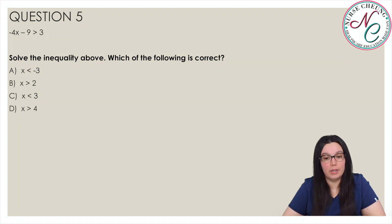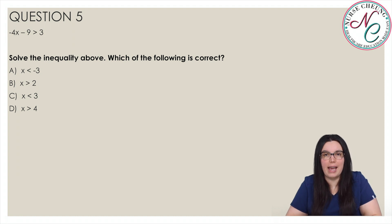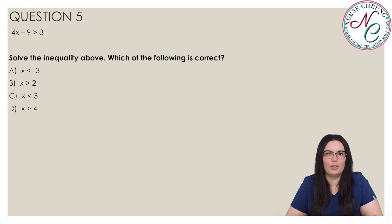Negative 4x minus 9 is greater than 3. Solve the inequality above — which of the following is correct? Is it A, x is less than negative 3; B, x is greater than 2; C, x is less than 3; or D, x is greater than 4? The correct answer is A, x is less than negative 3.